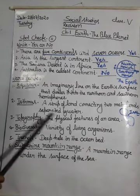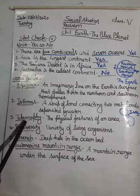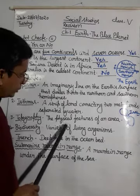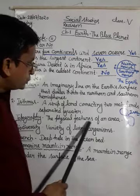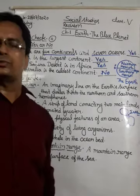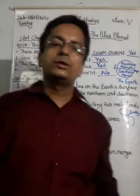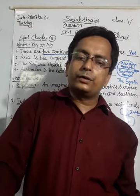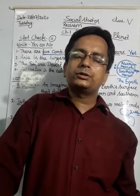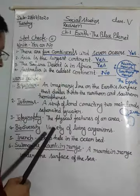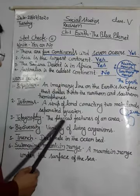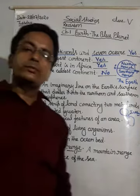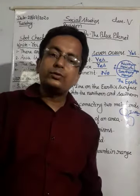Next is Topography — the physical features of an area. Topography means our Earth has different physical features. So when we talk about the physical features of an area, the answer will be Topography.